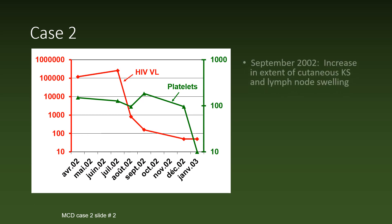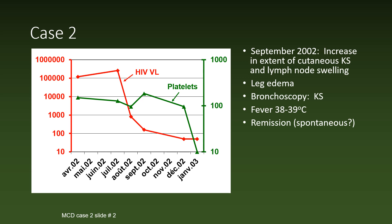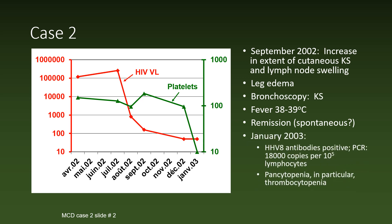In September of 2002, he had an increase in the extent of cutaneous Kaposi's sarcoma and lymphadenopathy with leg edema. In a bronchoscopy, lesions of KS were found, and he had a constant fever between 38 and 39 degrees. But then in October, he went into remission: the fever disappeared and the platelet count increased. However, in January of 2003, there was a relapse with positive HHV-8 antibodies, an elevated level of HHV-8 in his lymphocytes, and development of pancytopenia, in particular severe thrombocytopenia.